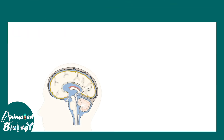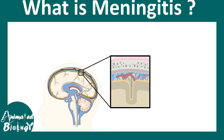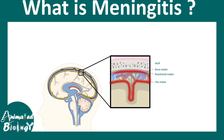What is meningitis? Meningitis simply means the inflammation of the meninges. Here is the skull just for orientation. Underneath that there would be dura mater, arachnoid mater, and pia mater, which are different parts of the meninges. The overall inflammation of the meninges is known as meningitis.